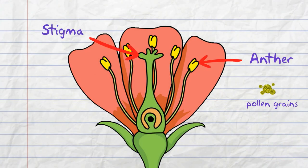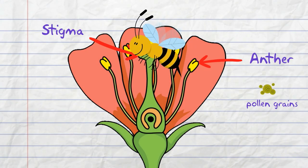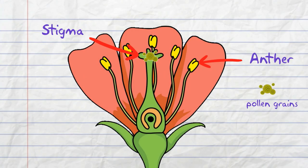The stigma is usually sticky to trap pollen. When a pollen grain lands on the stigma, the male reproductive cell inside the pollen grain can fuse with the female reproductive cell in the ovary of the flower.